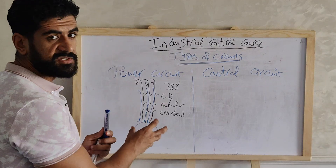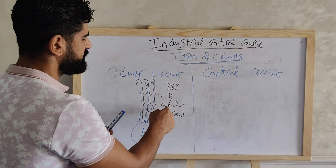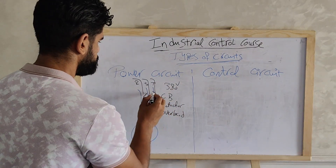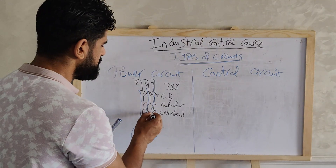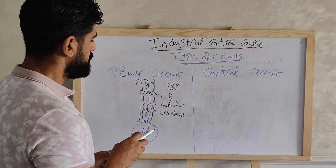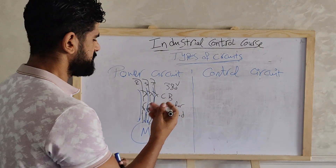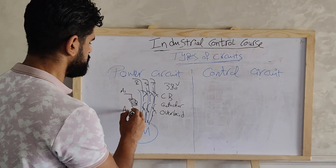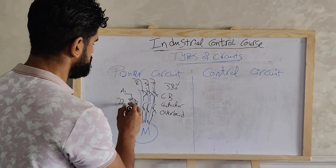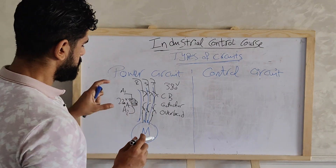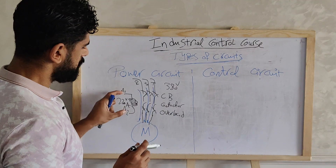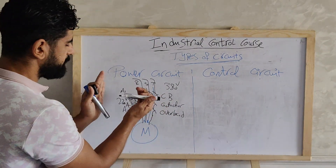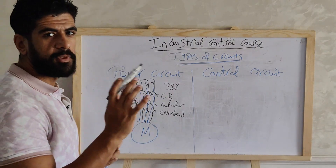To make the motor work we need the circuit breaker, contactor, and overload to all be turned on. The circuit breaker is closed manually. The overload has normally closed contacts. But the contactor is normally open, so to make it work we need to energize its coil by applying a rated voltage — typically 220V AC. When 220V AC is applied to the coil the contactor turns on and current flows to make the motor rotate. This voltage is applied via the control circuit.